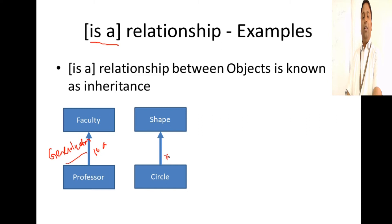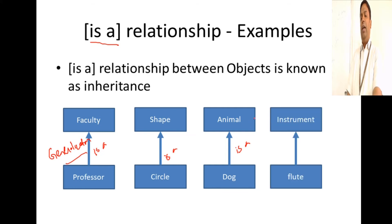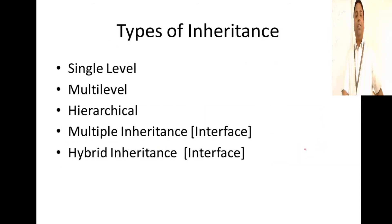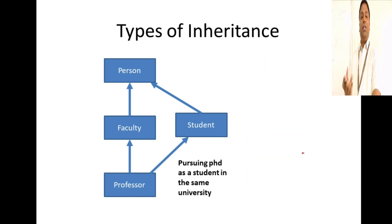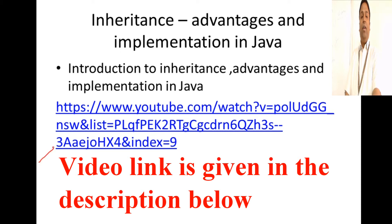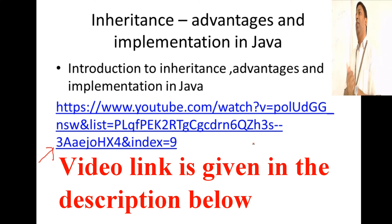For example: circle is a shape, dog is an animal — these are examples of inheritance. We have various types of inheritance. I'm not going to teach all of them here; you can look at my presentation on inheritance. I have a very detailed lecture covering implementation of inheritance in Java, the order of constructor calls, use of the super keyword, what inheritance is, the various types of inheritance, and how it is implemented in Java.